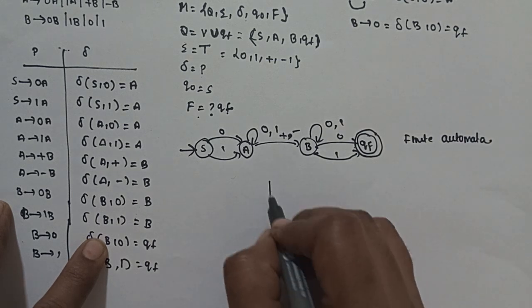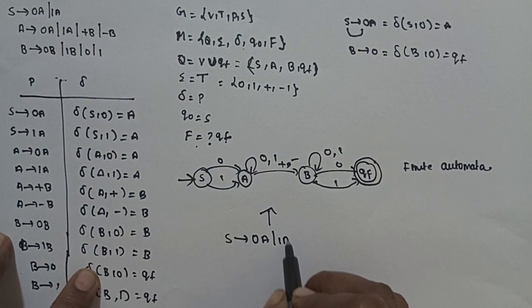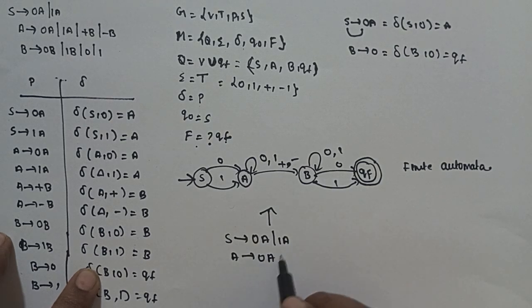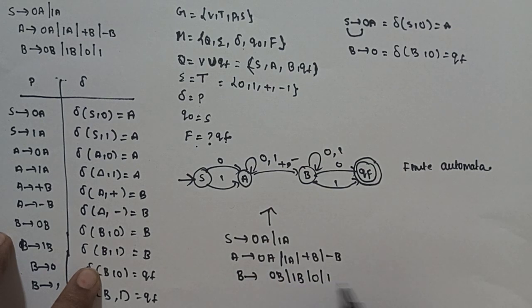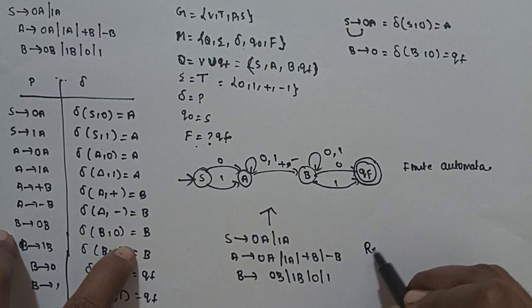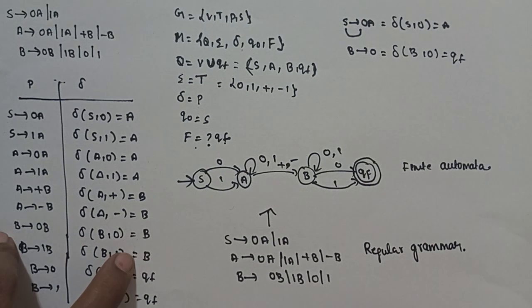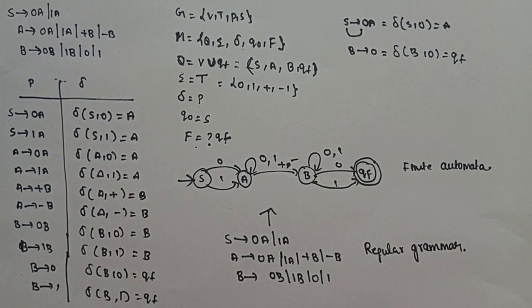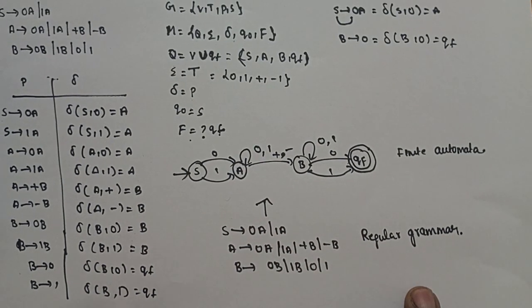The grammar productions are: S goes to 0A or 1A; A goes to 0A, 1A, plus B, or minus B; B goes to 0B, 1B, 0, or 1. This is a right linear regular grammar because the non-terminal appears in the rightmost position on the right-hand side of the production.